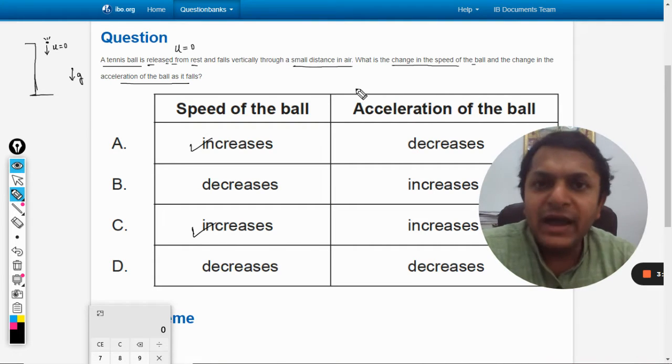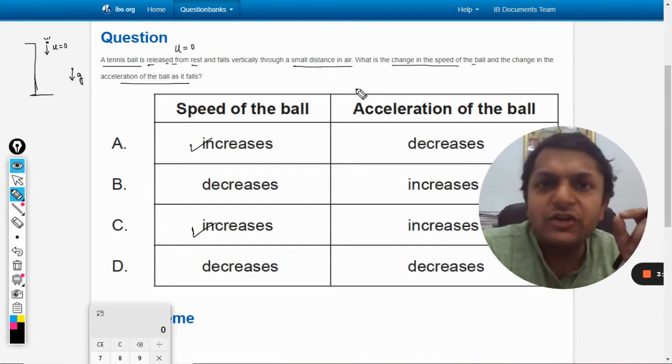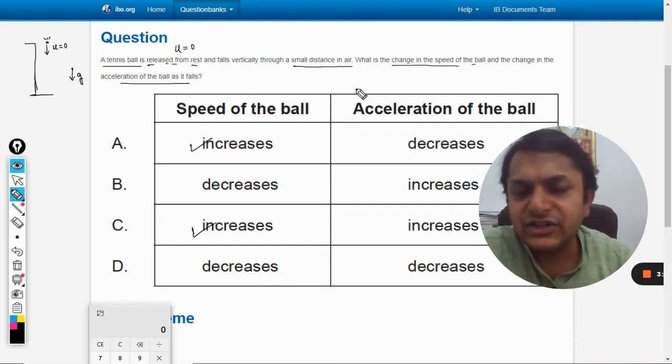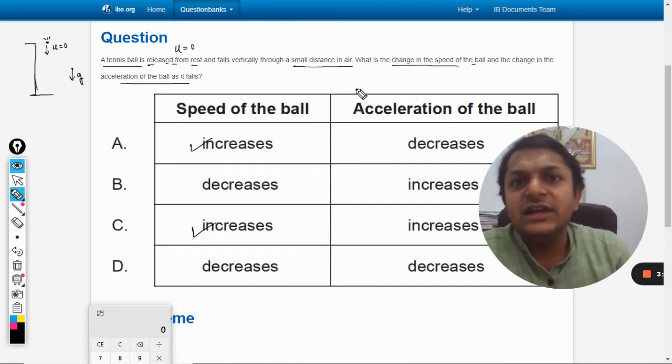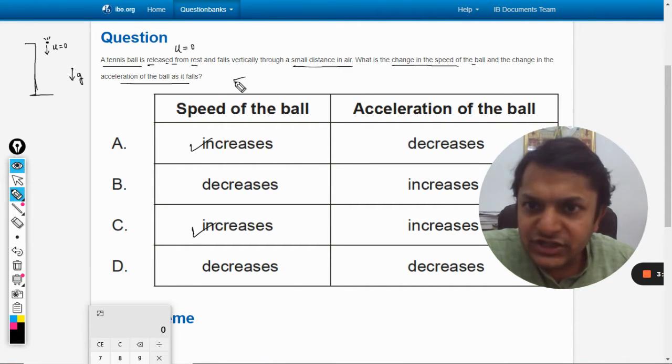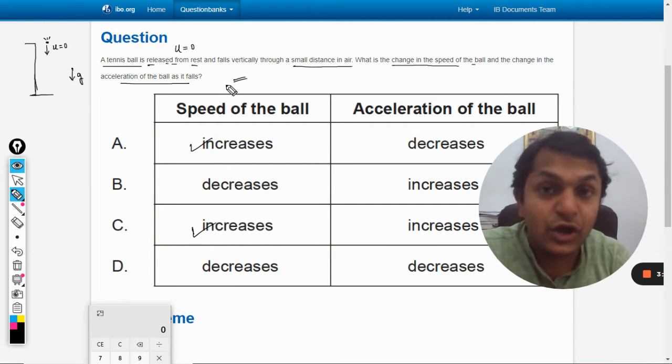Which will not change, so it will be acted upon by the acceleration due to gravity and it will not change, it will be constant value. But because the air resistance is not neglected, now see, in the question it is not given that air resistance is considered or it is neglected, it's not given here.